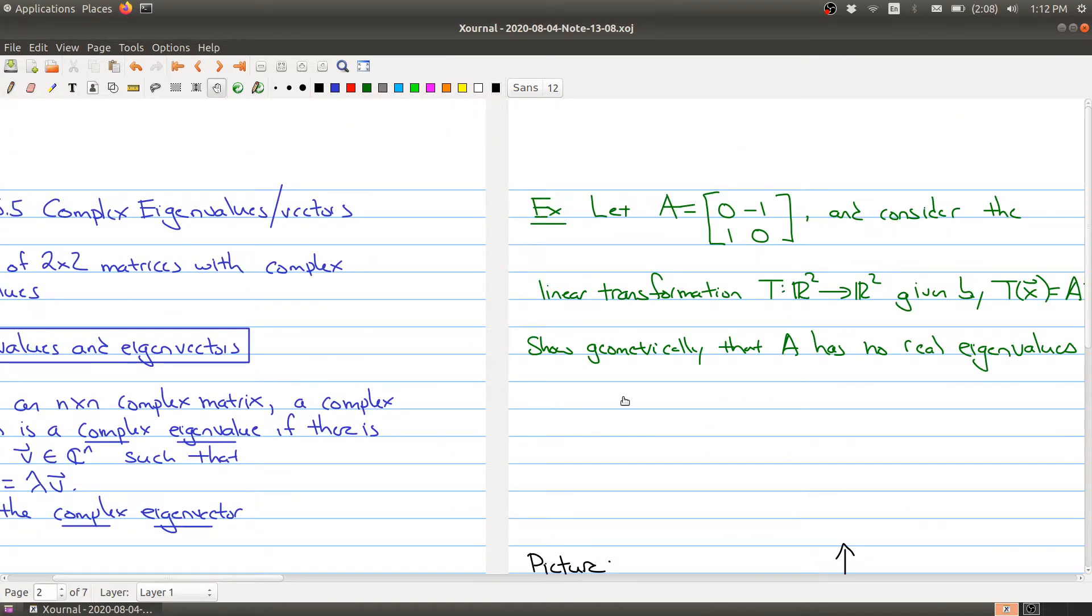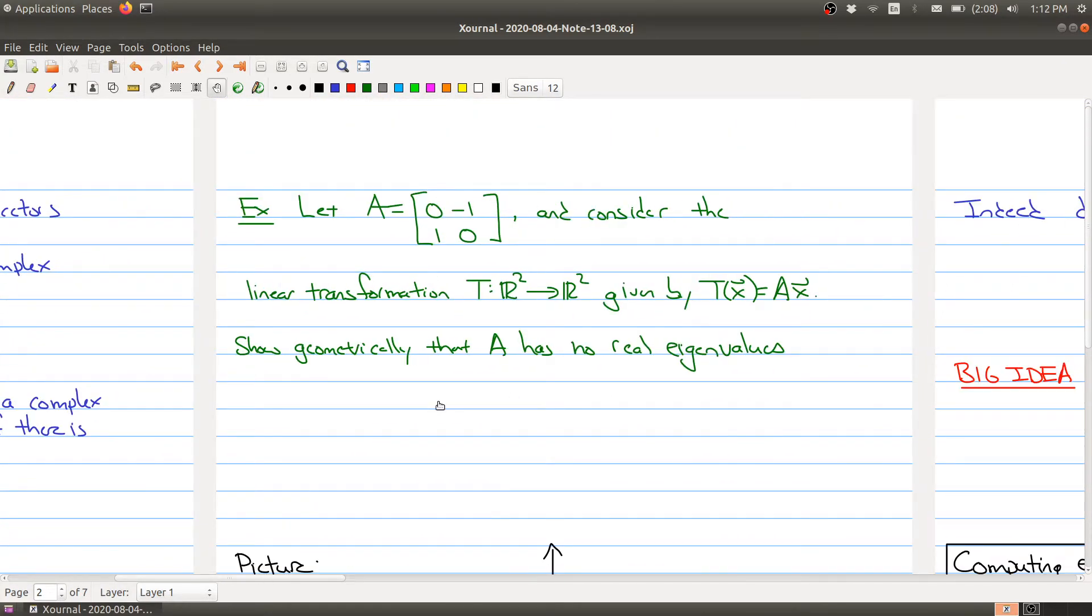Let's look at an example here. We'll drag this example through today's lecture. We have a two by two matrix and we're going to consider the linear transformation given by this matrix, just multiplying by the matrix A as we've done before.